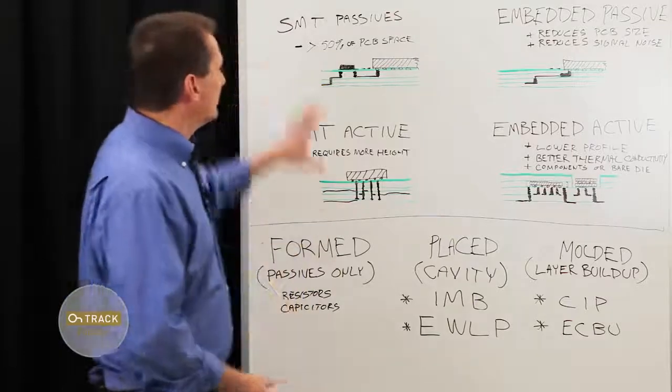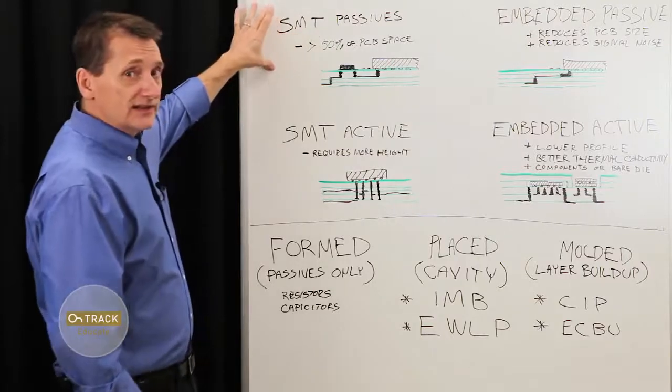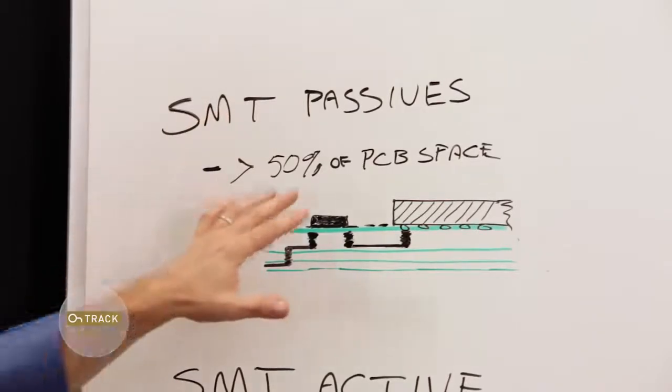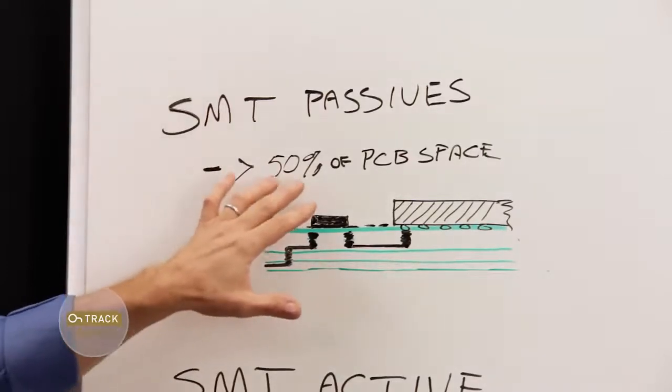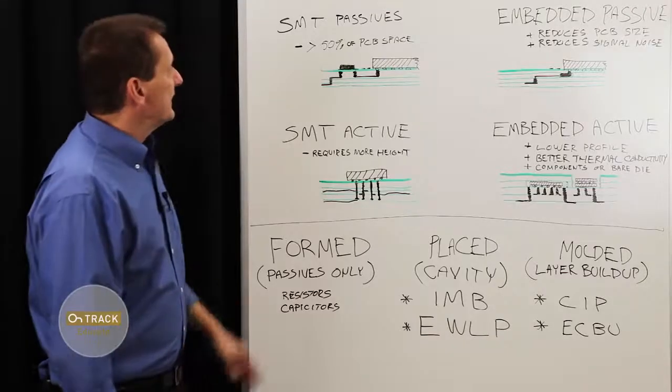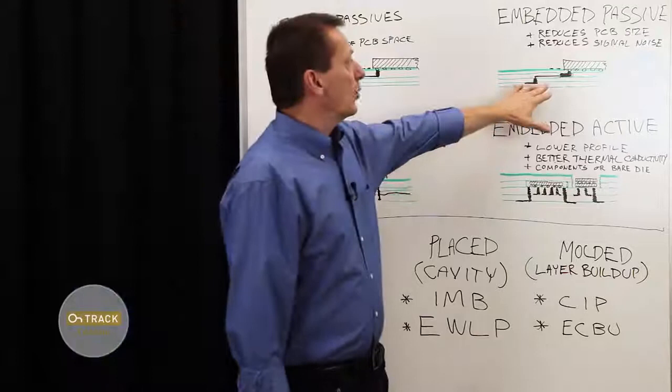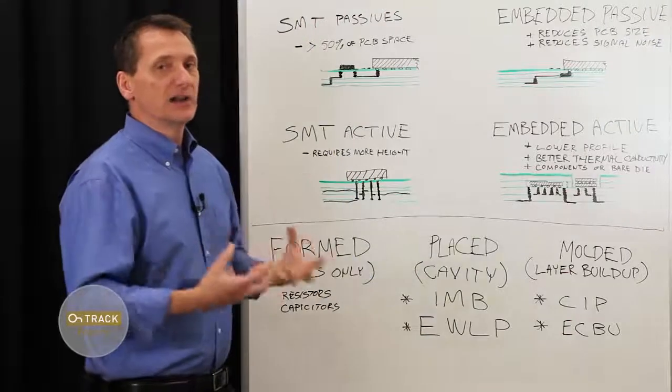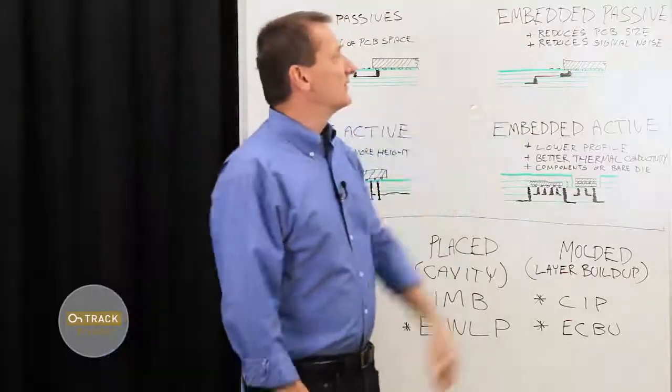I'll give an overview of the effects of embedded components. Let's take a look at a standard, traditional set of passives on a board, and it's estimated that generally about 50% of the component space on a board is consumed by passives - resistors and capacitors that are supporting the active components. Now when we start to embed these components into the board, it does two things. We reduce the overall PCB size so we can get a higher density board, smaller form factor, and we reduce signal noise.